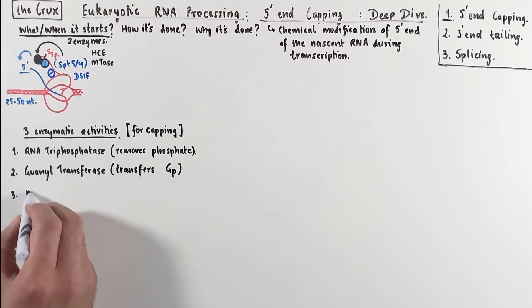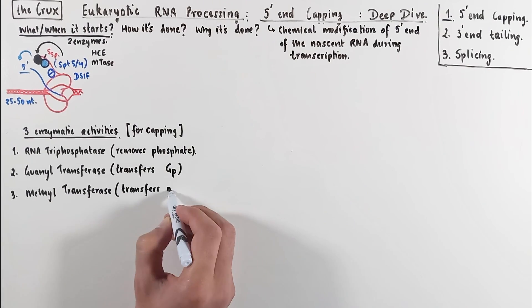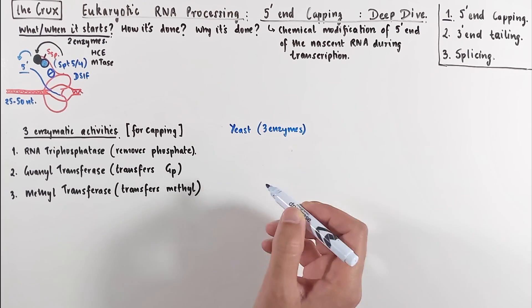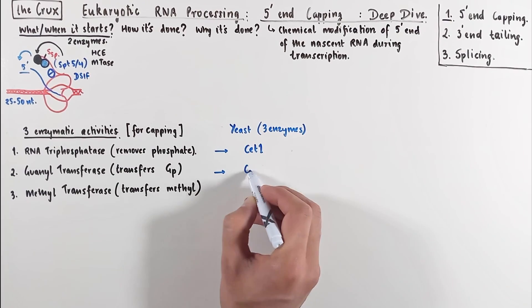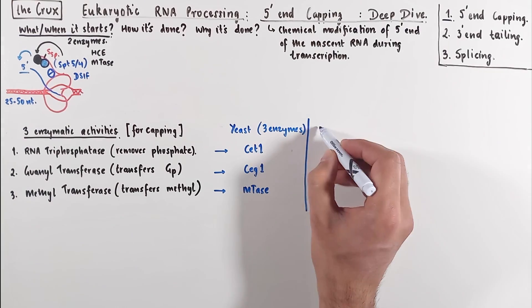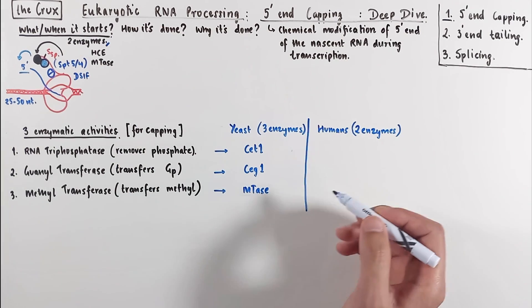And the third is a methyltransferase, which as the name suggests, transfers a methyl group. If we look at yeast capping enzymes, there are three separate enzymes for all these activities. They're called CET1, CEGE1, and just MTAs. But this video is about humans or mammalian systems in general, and we have two enzymes instead of three.